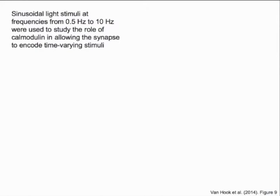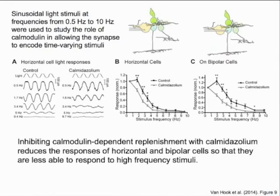We also approached this question by using sinusoidal light stimuli while recording from horizontal cells and on bipolar cells. In these experiments, the responses decrease in amplitude as frequency of the stimulus increases. In the presence of the calmodulin inhibitor, the responses shift so that the amplitude of the response fell off at lower frequencies than in control conditions. In other words, when calmodulin-dependent replenishment is inhibited, the synapse has a harder time keeping up with the higher frequency stimuli.